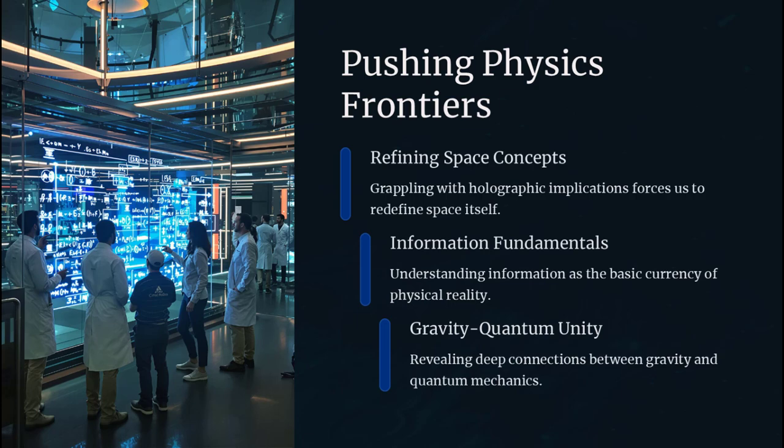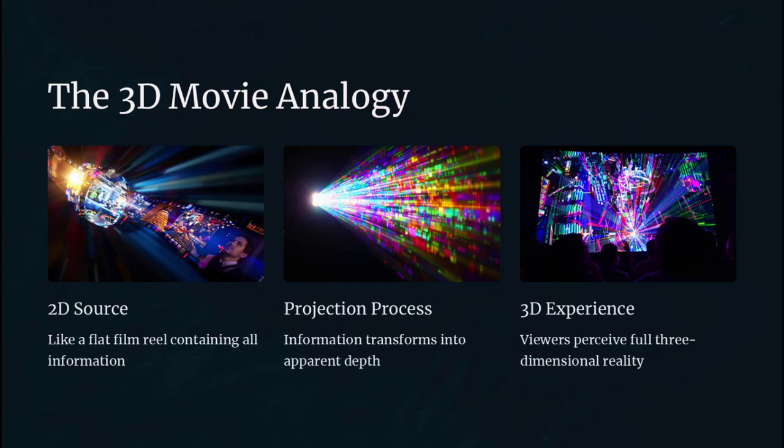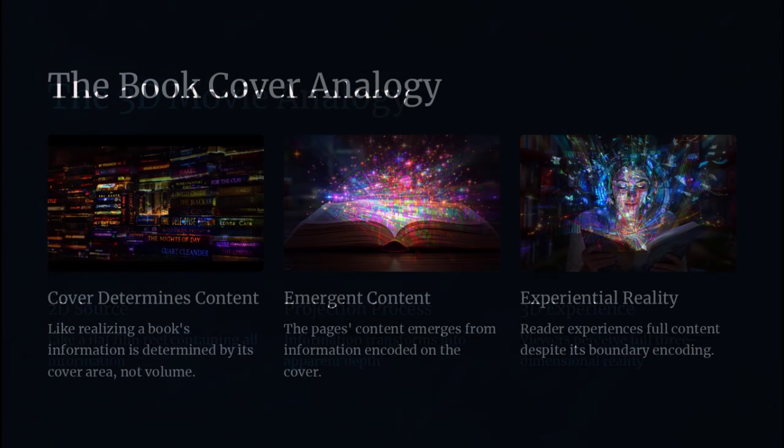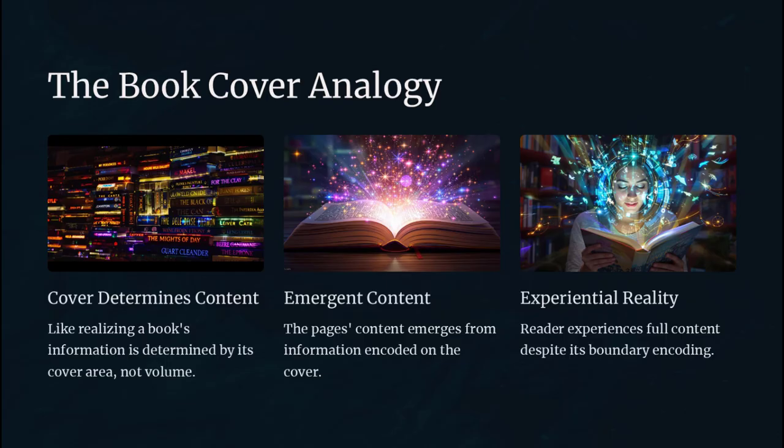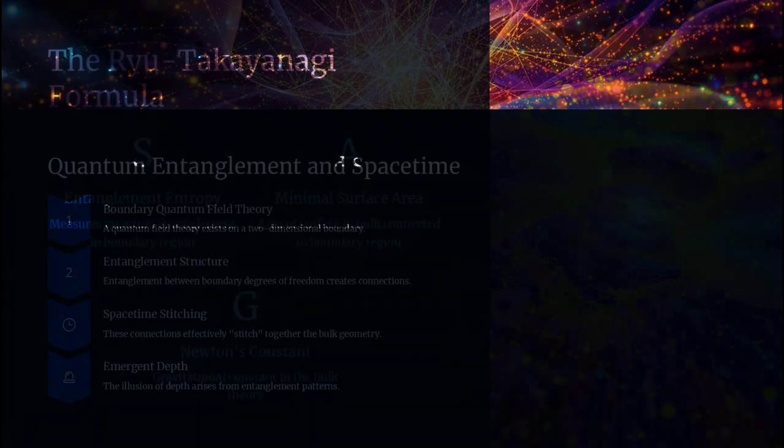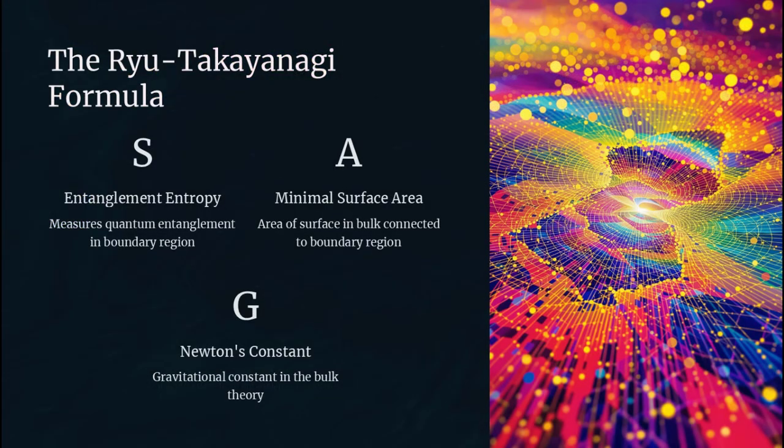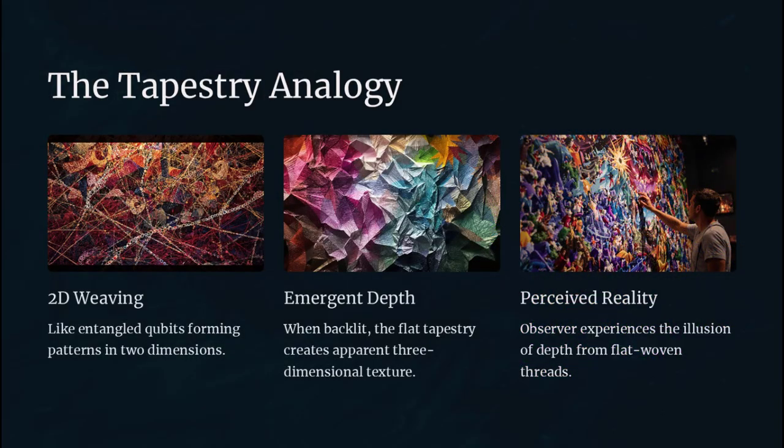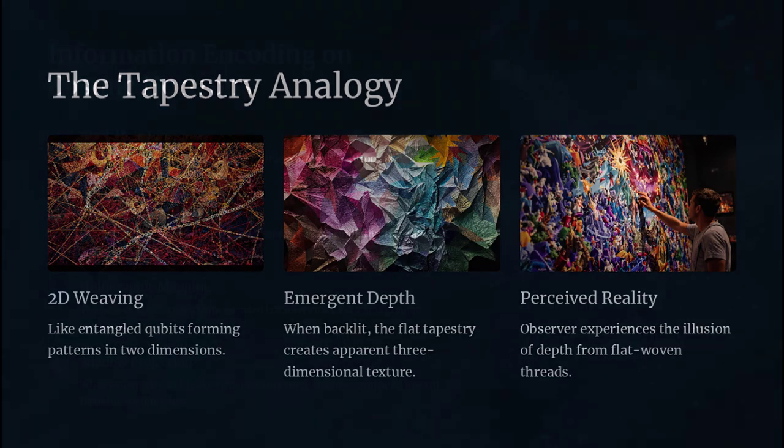So far, so good, until we confront the paradoxical implications for locality and causality. In a truly holographic universe, events that appear spatially distant in three dimensions could, at the level of the boundary, be adjacent bits of information, blurring the line between here and there. This raises thorny questions about how signals propagate, how entanglement is mediated, and whether the speed of light limit is simply a feature of our emergent description rather than a fundamental bound.